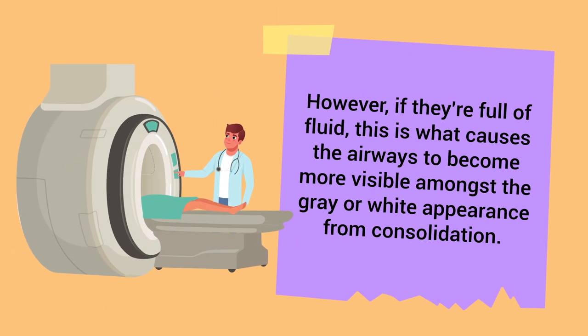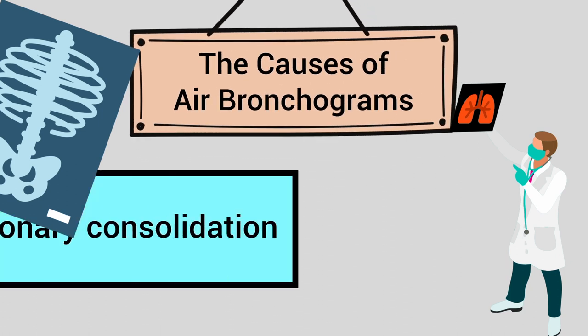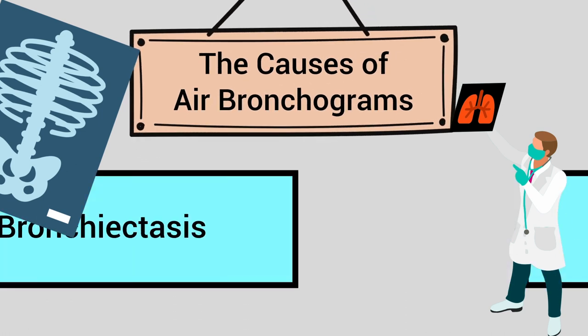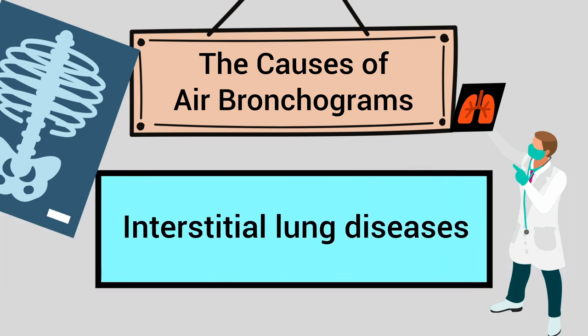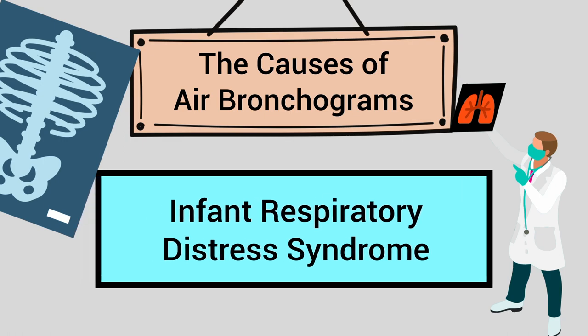However, if the alveoli are full of fluid, this is what causes the airways to become more visible amongst the gray or white appearance from consolidation, and this is referred to as the air bronchogram sign. The causes of air bronchograms include pulmonary consolidation, pneumonia, atelectasis, bronchiectasis, pulmonary edema, interstitial lung diseases, pulmonary hemorrhage, and infant respiratory distress syndrome in neonates.